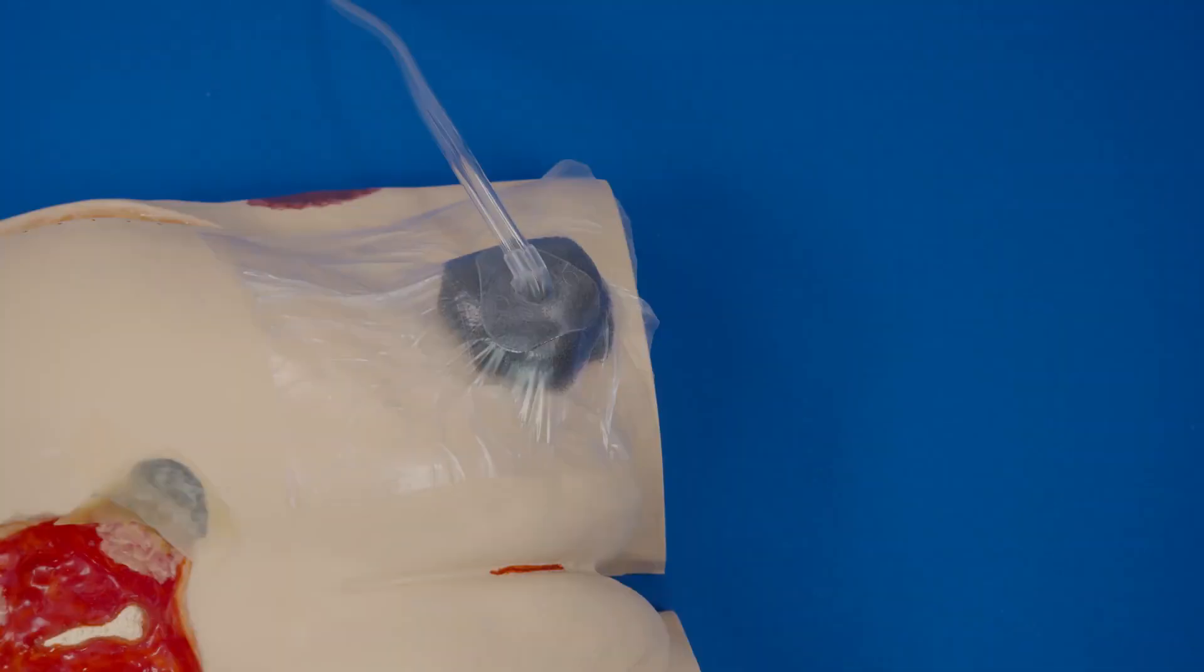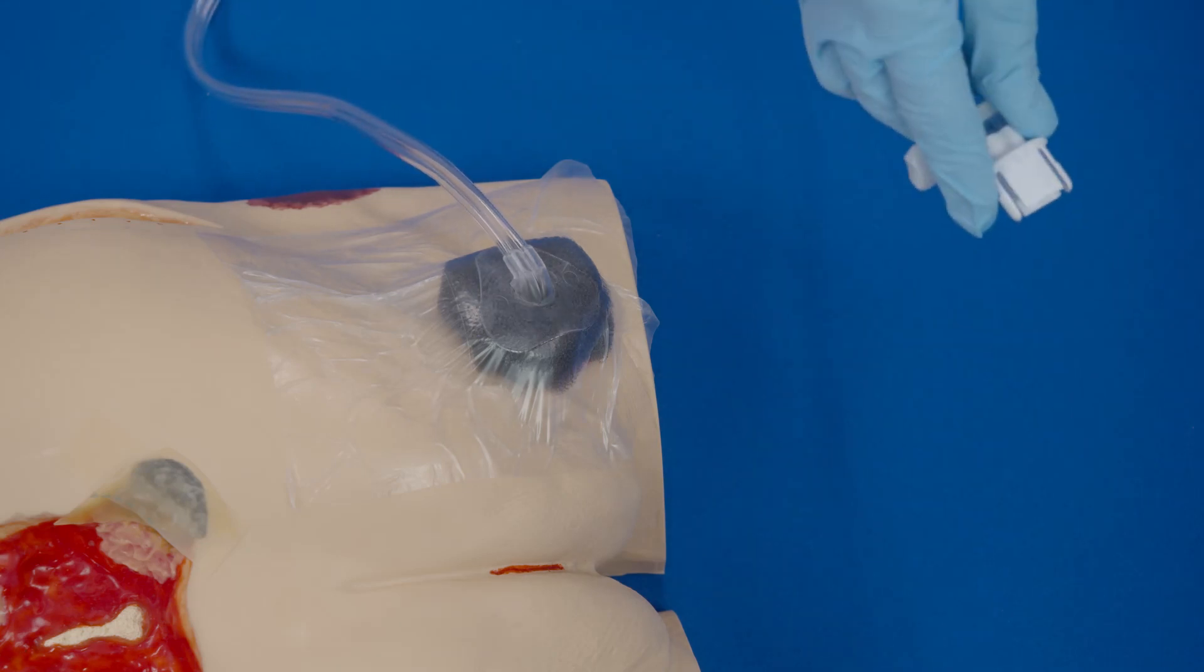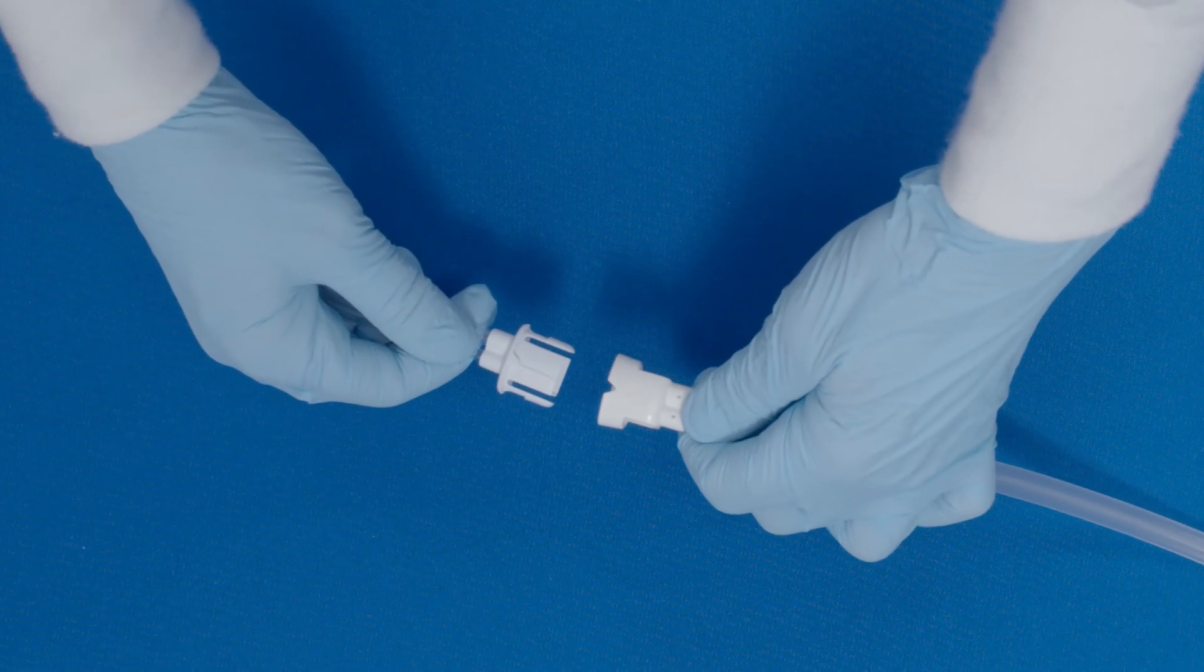Attach the dressing tubing to the pump tubing by pushing the quick connector together until you hear a secure click.